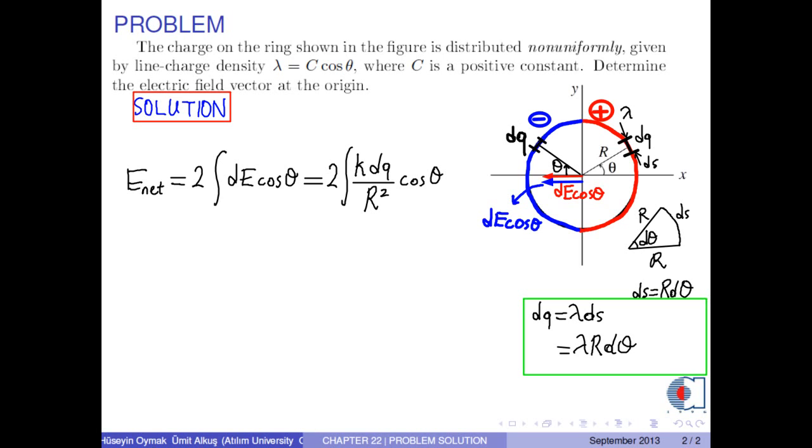Now, we put this value into the integral. Here, one r's are cancelled. Since lambda is c times cosine theta. Here, k, c and r are constant, so they can be taken outside the integral sign.